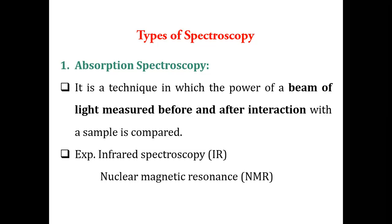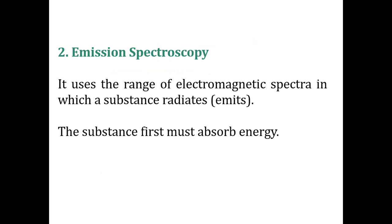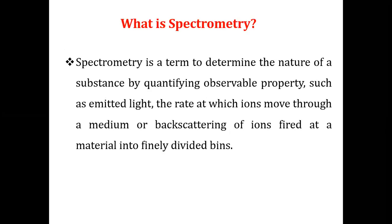Examples of absorption spectroscopy include infrared and nuclear magnetic resonance. The second type is emission spectroscopy, which uses the range of electromagnetic spectra in which a substance radiates or emits. It is opposite to absorption — here, the molecule emits radiation rather than absorbing it. However, keep in mind that for emission to occur, the substance must first absorb energy before it can emit.